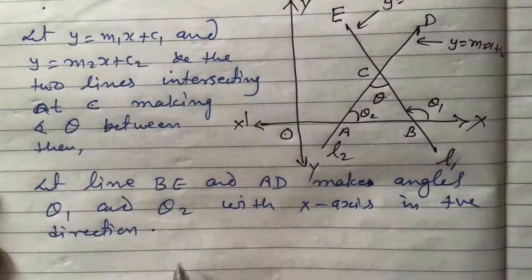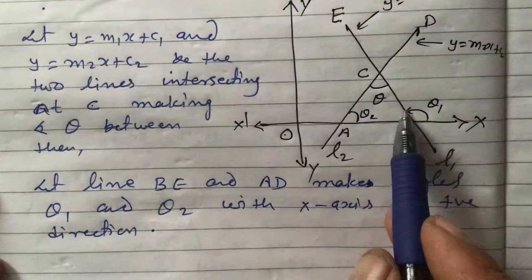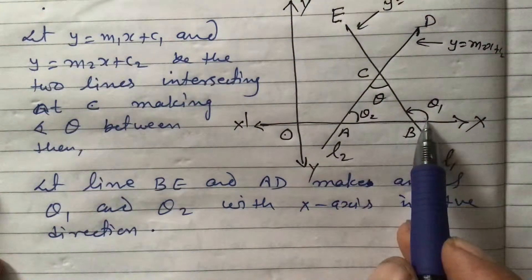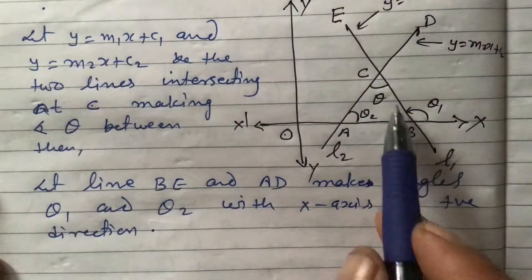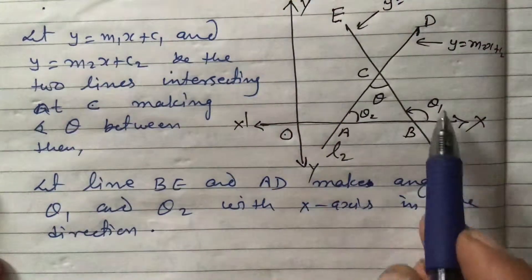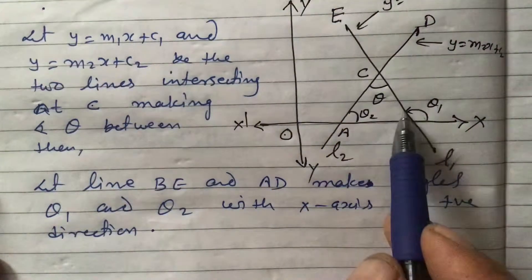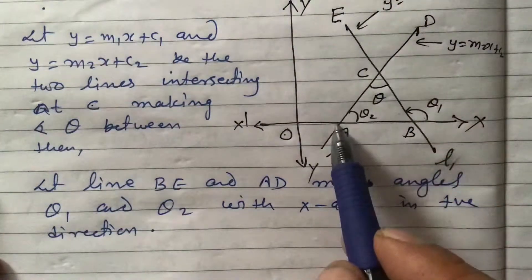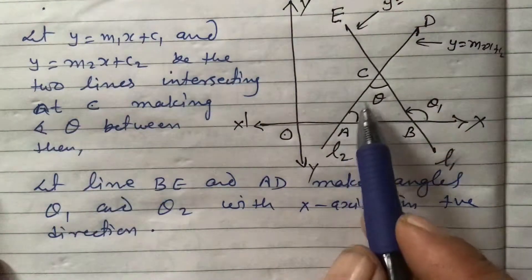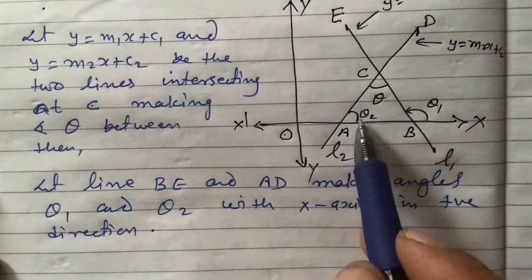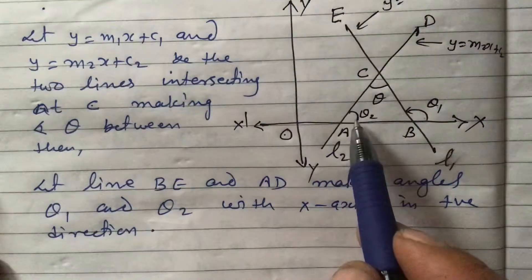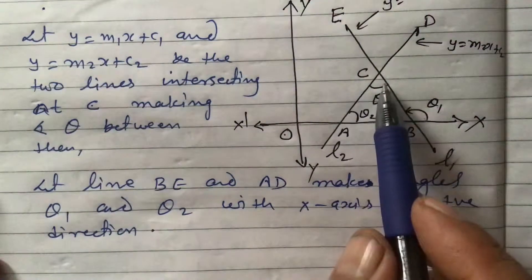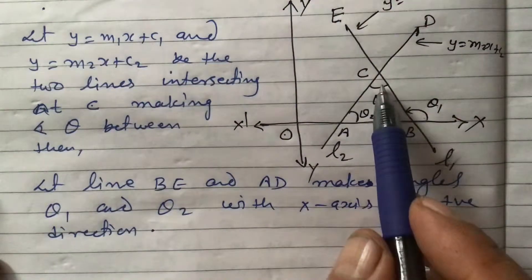This line makes an angle of theta 1 in the anticlockwise direction with the x-axis, and this line makes an angle of theta 2 with the x-axis in the anticlockwise direction. Positive direction means anticlockwise direction. Is this clear?